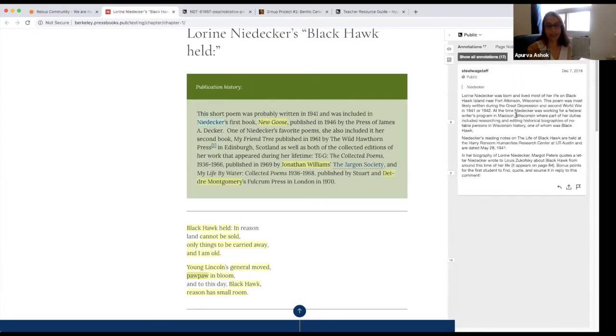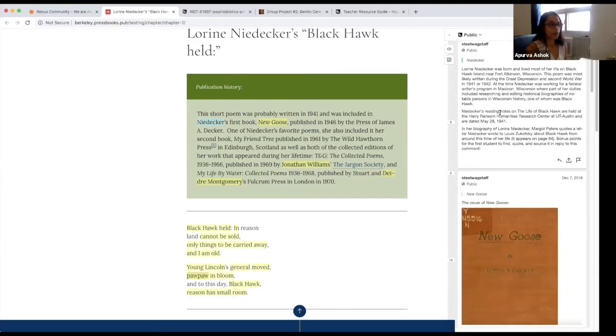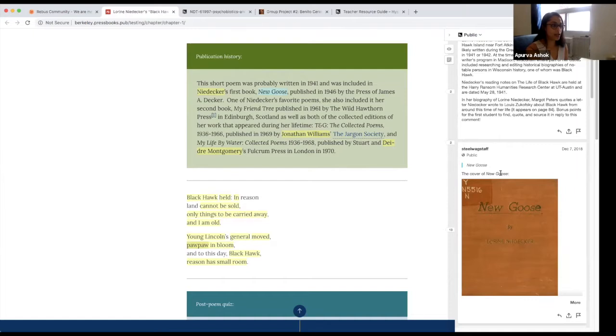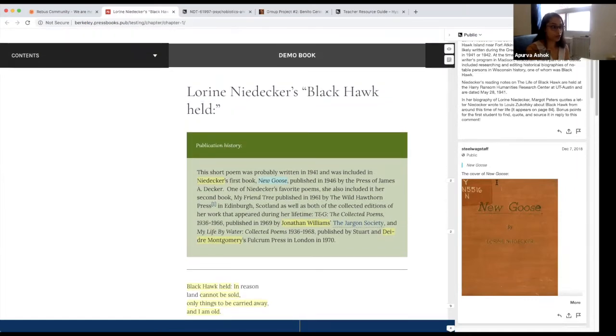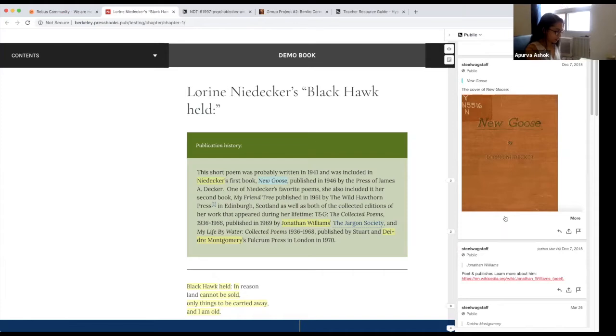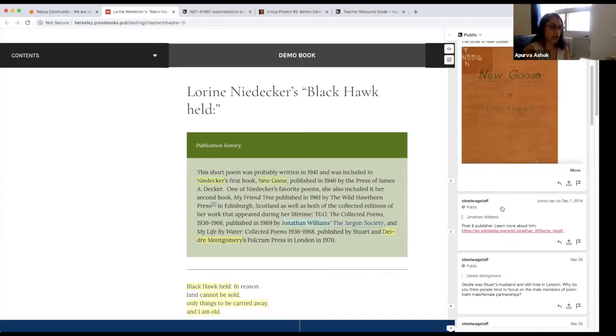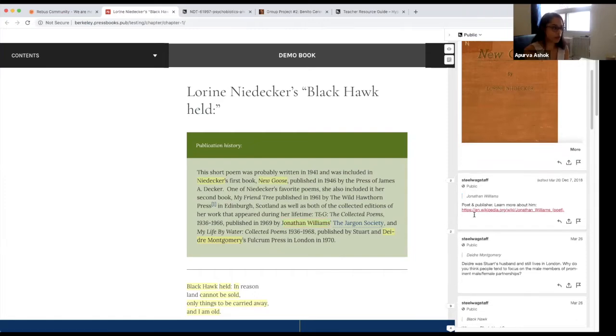So this first annotation here I see is, in this case, Steele, who might be the instructor for this text. He's given me a little background information about the author Lorine Niedeker. I can also click on the show all annotations tool to see all of the 17 annotations that have been made on this particular book. So if I click on it and I scroll further down the text, I see here that the instructor has actually added an image. It's the cover of New Goose, which is one of Niedeker's books. And as I'm going along, I see that there's a lot more information that I can include or I've seen the instructor include in this case. Here, Steele has actually linked out to a Wikipedia article about Jonathan Williams, who was Niedeker's publisher. So I can click on this link and be taken to a page with more information about him if I wanted.